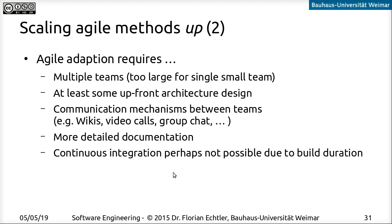One example is Microsoft Windows. You can build all of Windows from scratch, but even on a big Microsoft server farm it takes around 24 hours. So if you had to do that for every commit, you would never get any work done. This was one direction of scaling agile methods for larger systems.